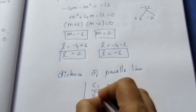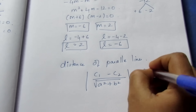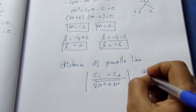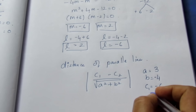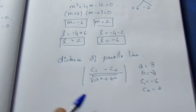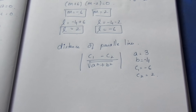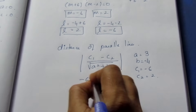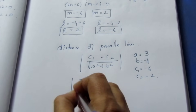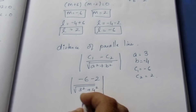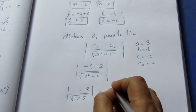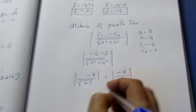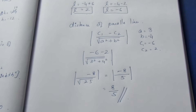Using the distance formula for parallel lines: d = |c₁ - c₂| / √(a² + b²), where a = 3, b = -4, c₁ = -6 and c₂ = 2. So d = |-6 - 2| / √(9 + 16) = 8 / √25 = 8/5. The distance between the parallel lines is 8/5 units. Thank you.